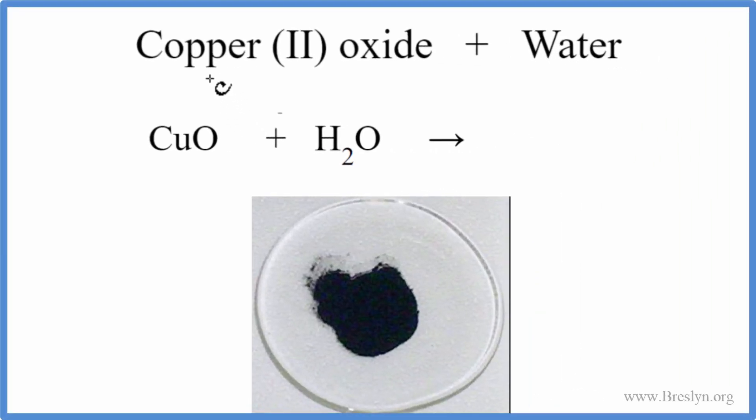In this video, we'll look at what happens when we put copper 2 oxide in water. That's CuO plus H2O. So we have copper oxide, it's this black powder here. We'll put a little S because it's a solid, and then we have liquid water. So we're going to put the powder in the water and see what happens.